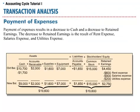SoftBite paid $1,700 in cash for September expenses, as follows: store rent of $600, employees' salaries of $900, and utilities of $200. These payments resulted in a decrease to cash of $1,700 and a decrease to retained earnings of $1,700. The decrease to retained earnings is the result of rent expense, salaries expense, and utilities expense.